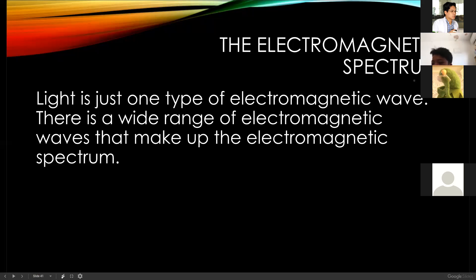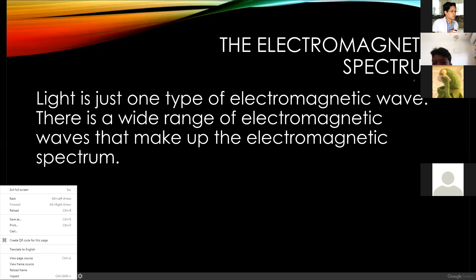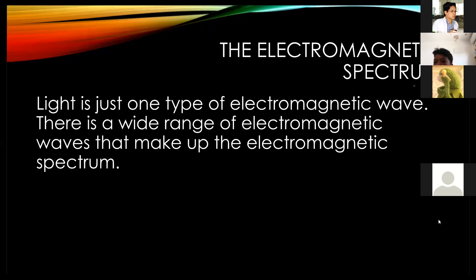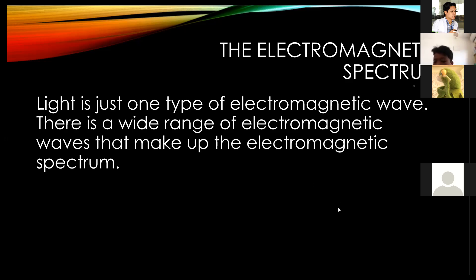The first type of wave is a mechanical wave. The second type of wave is the electromagnetic wave. The difference between the two: a mechanical wave needs a medium in order to travel, just like sound waves. The electromagnetic wave does not actually need a medium in order to travel, but it can travel through a medium or matter.